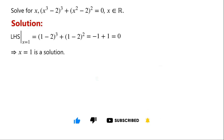Are there other solutions? If so, how to find them? If not, how to prove there are no other solutions? This is a polynomial equation with a degree of 9. Because we have already found x equals 1 is a solution,